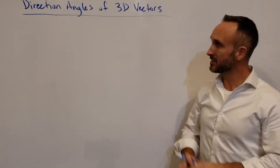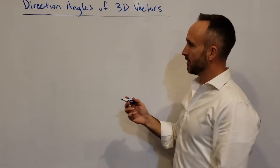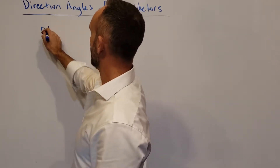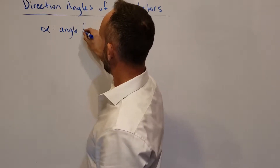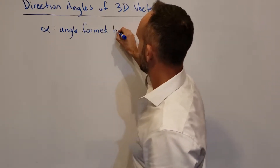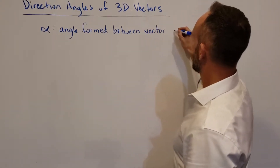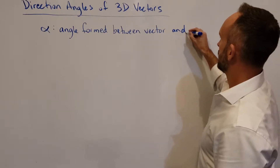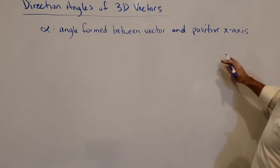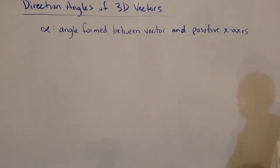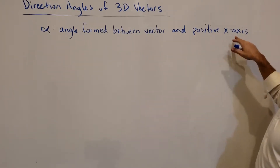Let's define what the direction angles are. There are three of them. The first direction angle is the angle alpha. Alpha is the angle formed between the vector and the positive x-axis. So that's alpha — the angle formed between whatever vector you're looking at and the positive x-axis.